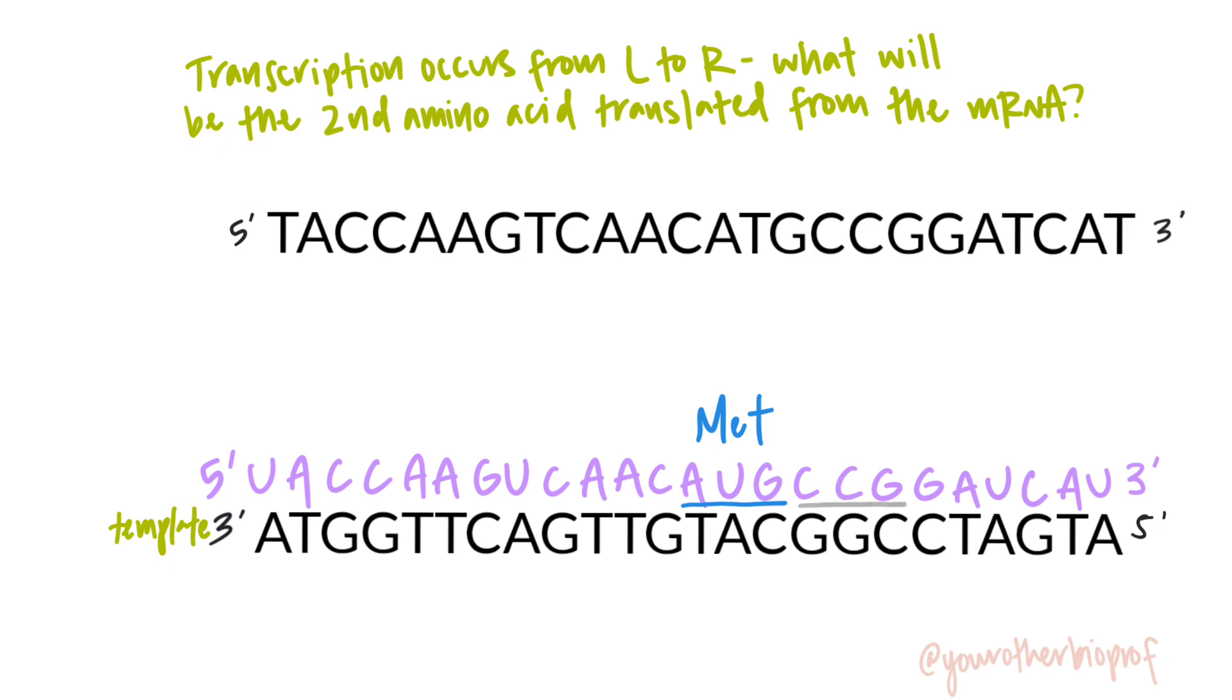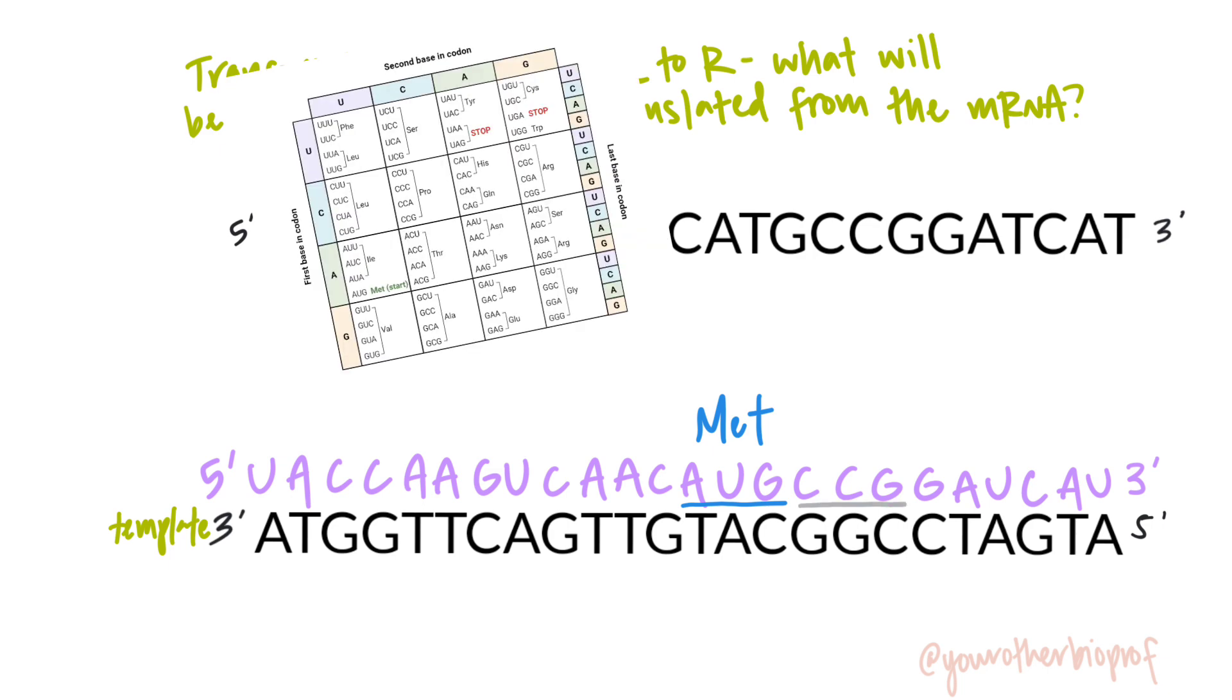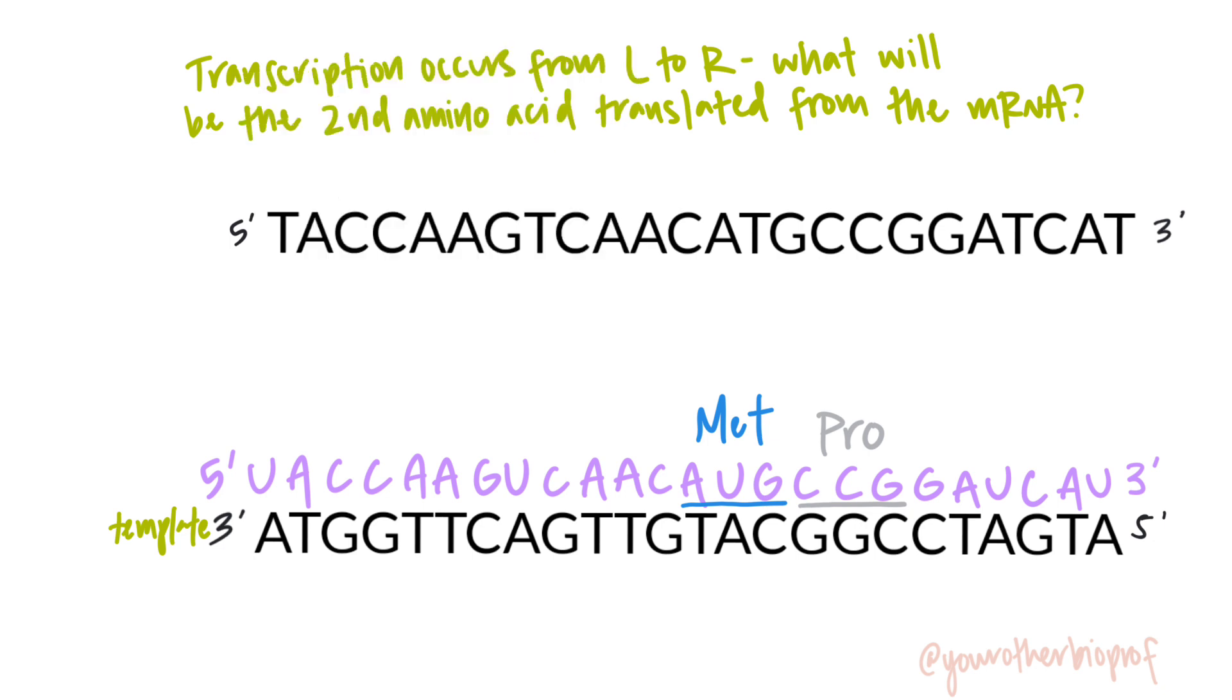Next codon would be CCG. And CCG is a proline codon. And you could keep going, but for this question we don't need to, right? We just wanted the second amino acid and we got it. It's proline.